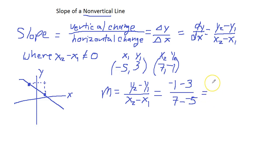Negative 1 minus 3 gives me negative 4. Now, in the denominator here, you notice I have a double negative. What happens is that becomes a positive. So, 7 plus 5 makes 12. Reduce your fraction. So, we have negative 1 over 3. And there's our slope for this line that goes through points negative 5 comma 3 and 7 comma negative 1.